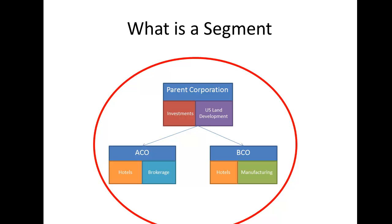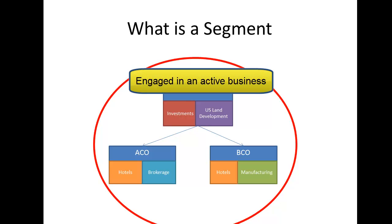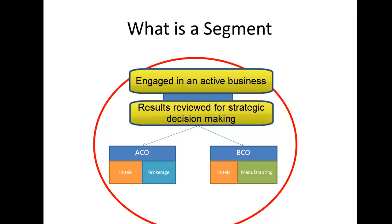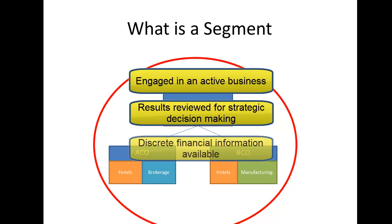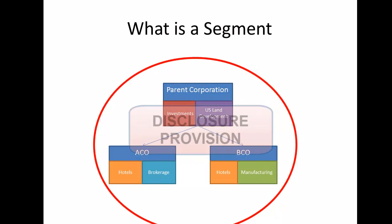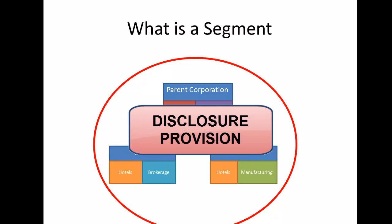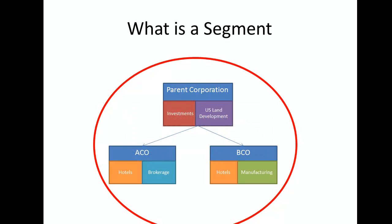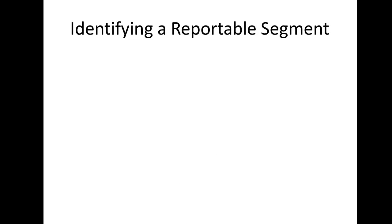So under IFRS 8, an operating segment is defined as one that is engaged in an active business activity with revenues and expenses, whose operating results are regularly reviewed, evaluated, and used to make resource allocation decisions, and for which discrete financial information is available. Keep in mind that this provision is only a disclosure requirement in the notes to the financial statements. Once we have identified our operating segments, we apply quantitative thresholds to determine which among them need to be separately disclosed.